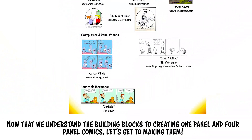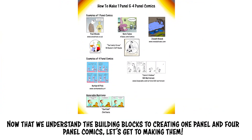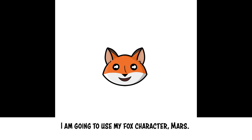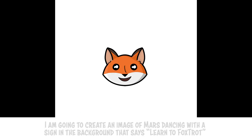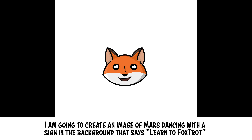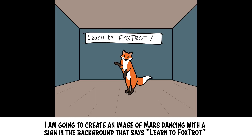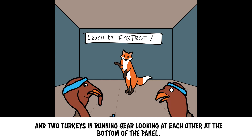Now that we understand the building blocks to creating one-panel and four-panel comics, let's get to making them. Let's start with the one-panel comic. I am going to use my fox character, Mars. I'm going to create an image of Mars dancing with a sign in the background that says 'Learn to Foxtrot,' and two turkeys in running gear looking at each other at the bottom of the panel.